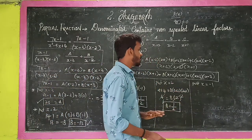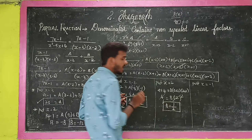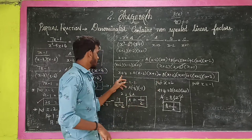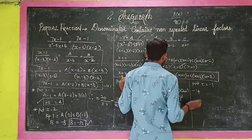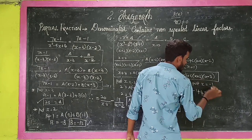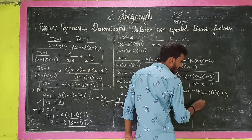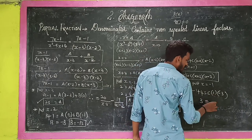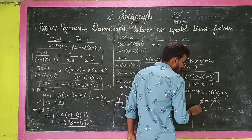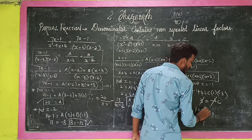Now put x equals minus 1 to find C. A and B terms become zero. Minus 1 plus 4 equals 3. C is equal to minus 3C... after cancelling, C is equal to minus 1.